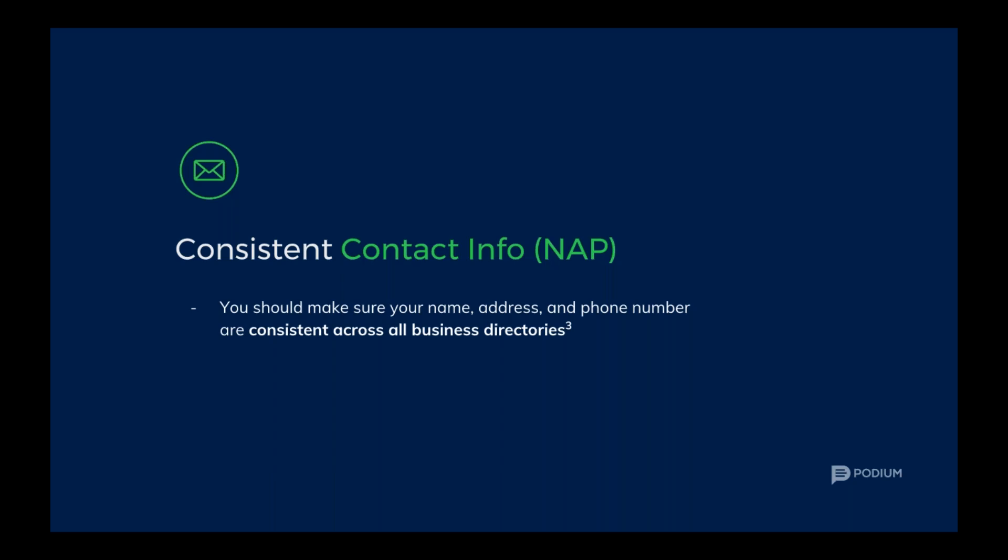Next, you'll want to have consistent contact information — your name, address, and phone number — commonly referred to as NAP. According to Moz's local search ranking factors, on-page signals like NAP play the biggest role in where your business ranks. Because of this, you should make a concerted effort to ensure that all this information is consistent across all of your listings, business directories, and on your website. When I'm talking about consistency, I mean it should be in the same format. If your address has 'South' in it, it should always either be abbreviated or always spelled out. You shouldn't mix and match, because if you do, it could confuse the search engines and your local search ranking could be dinged.